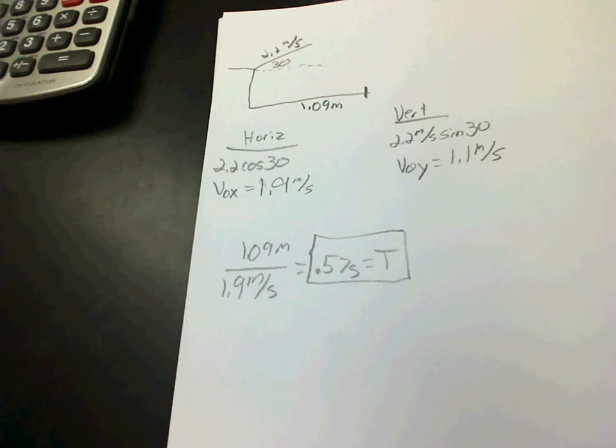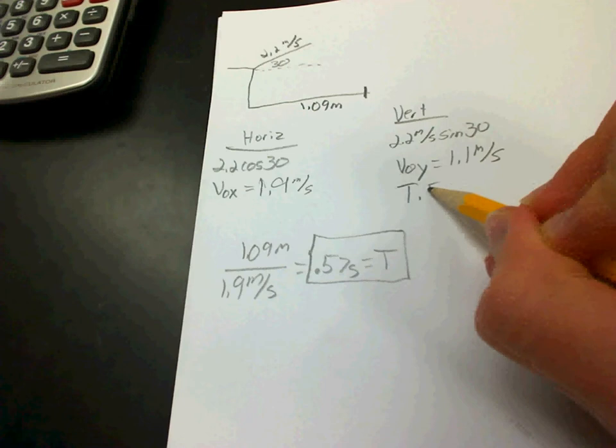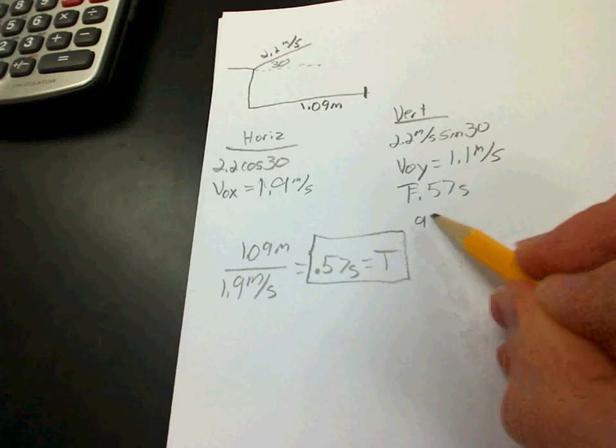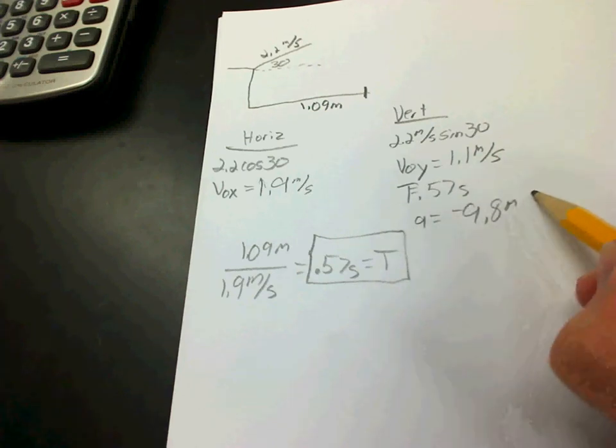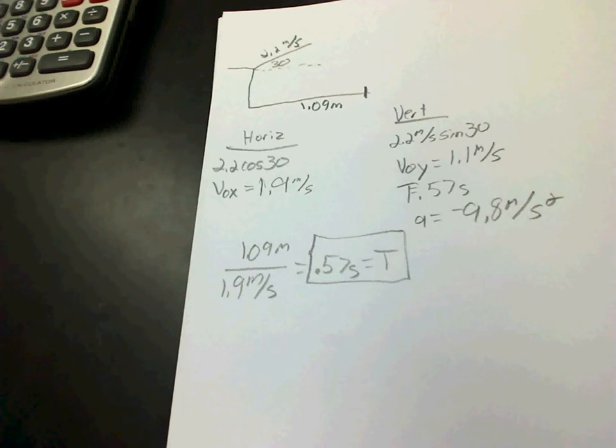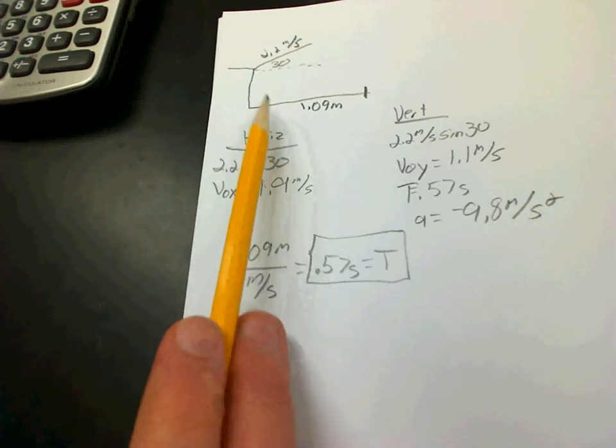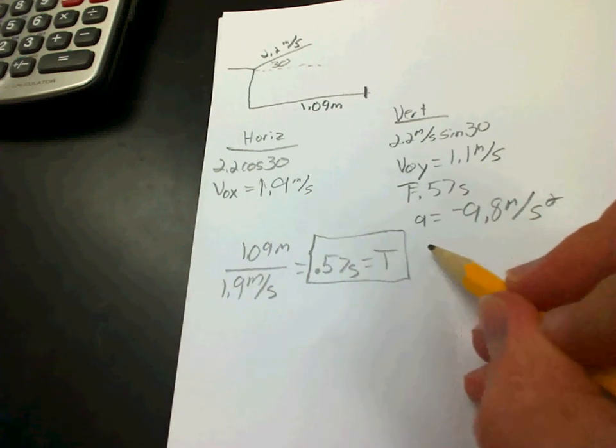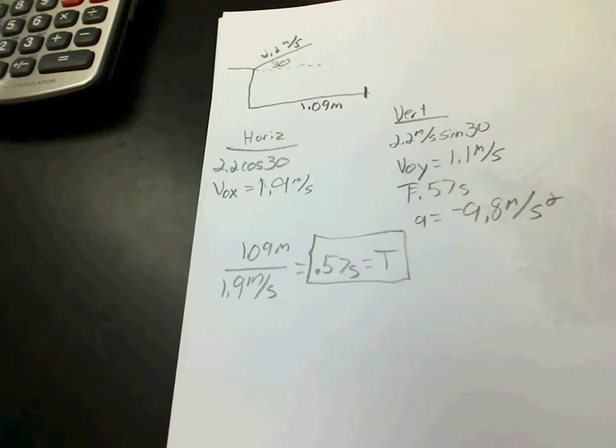So since we're dealing with how high she is off the ground when she launches, we're thinking about that vertically. So what do we know vertically? We know our initial velocity is that. We know our vertical time is the same as our other time, which is 0.57 seconds. We know what our acceleration is. If you want to consider the ground level being zero, you know what your initial position is. Or if you want to say that's actually your final position, that's fine too. Either way you want to say it, it's fine. You're going to end up with the same result.